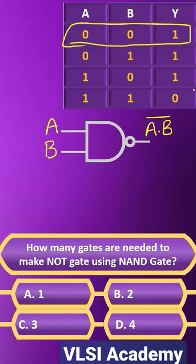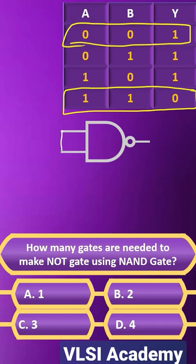Either both of them 0 then output will be 1. When both of them are 1 then output is 0. It means if we tie both input together and give A as input then output will be A bar.